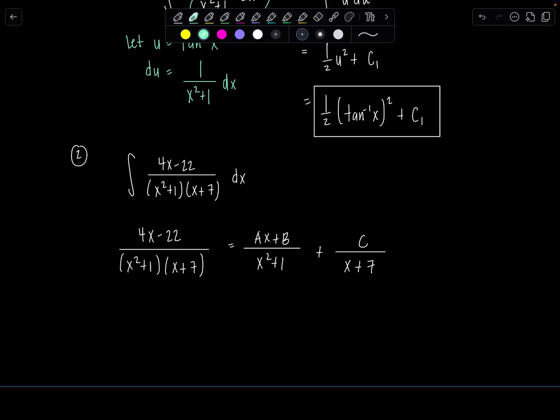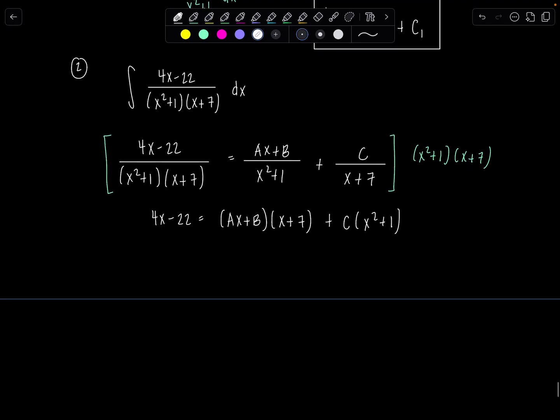Now let's multiply through by the LCD, which is x squared plus 1 and x plus 7. And then we have 4x minus 22 equals ax plus b times x plus 7 plus c times x squared plus 1. And then I'm just going to multiply everything out.